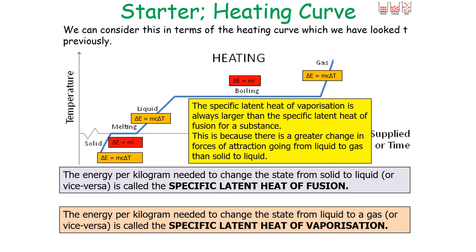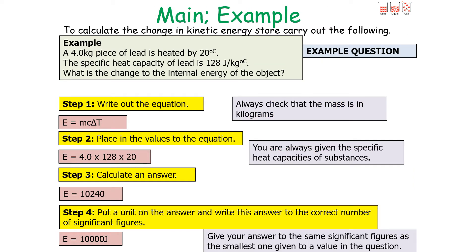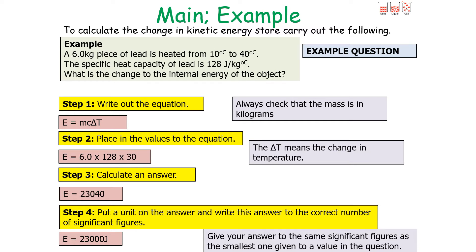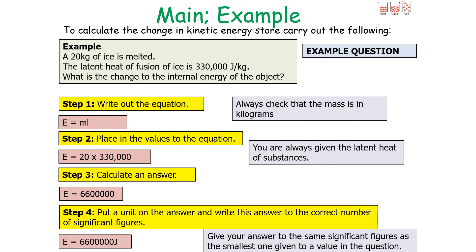For example: a 4 kilogram piece of lead is heated by 20 degrees Celsius. The specific heat capacity of lead is 128 joules per kilogram degree Celsius. What is the change in the internal energy of the object? Since there is a change of temperature, we use E = mcΔT. Place the values into the equation and calculate the answer with the correct unit and significant figures. Note that ΔT means change in temperature, so if given a starting and final temperature, calculate the difference — for example, 10 to 40°C gives ΔT = 30°C.